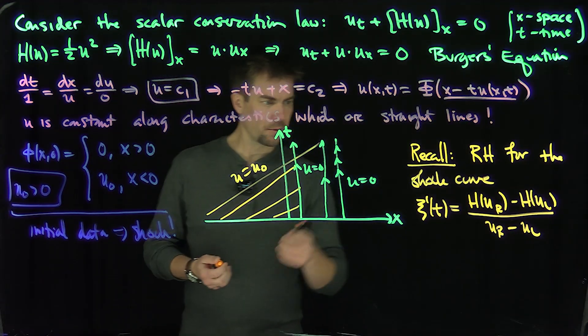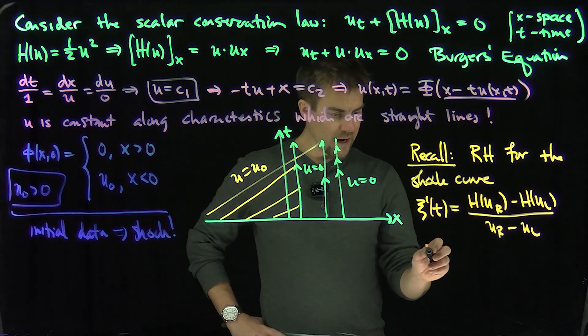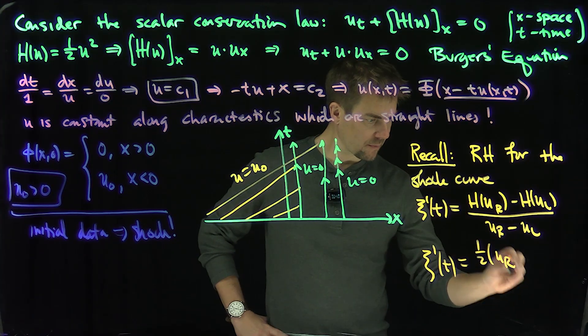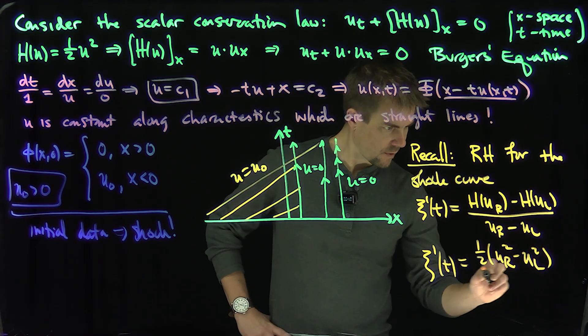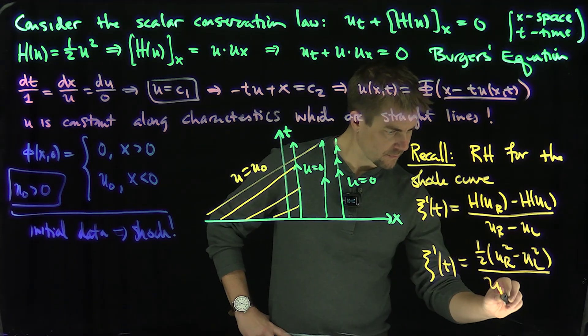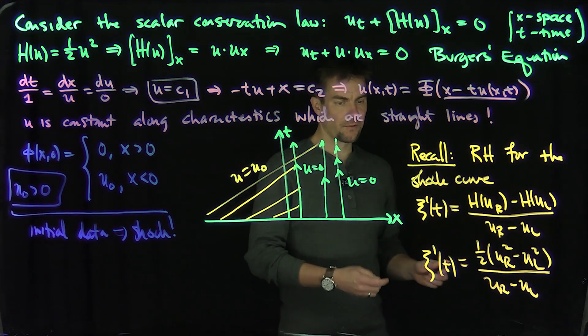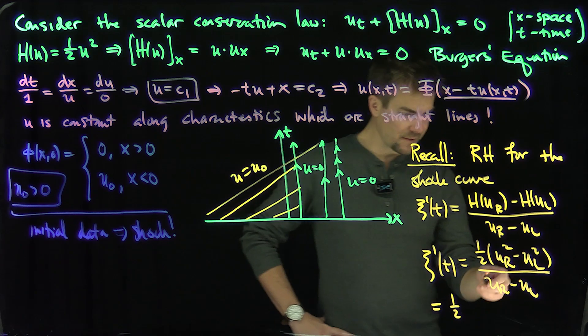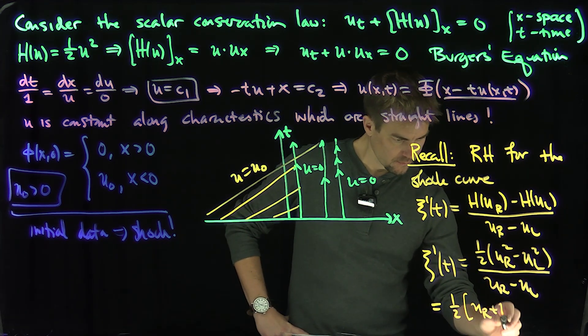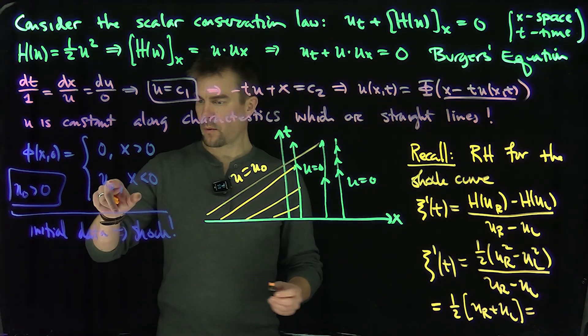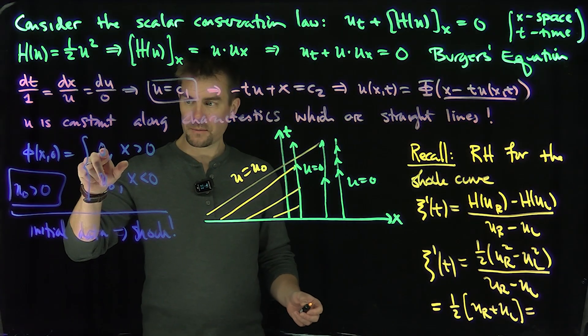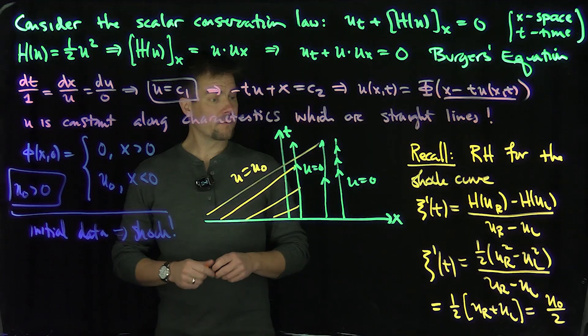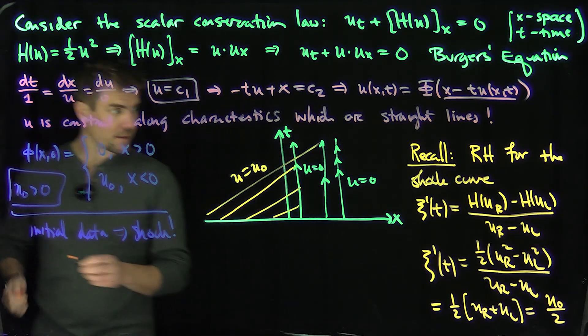So what is this? So this Rankine condition is going to be x_c prime of t, it's going to be one half u_r squared minus u_l squared over u_r plus u_l. And of course, what does that boil down to? That just boils down to simply just one half. This is one half, the u_r minus u_l cancels. I should have one half u_r plus u_l. And of course, u_r is going to be zero, the left limit is going to be u_0 over 2. So I just have u_0 over 2. Beautiful.